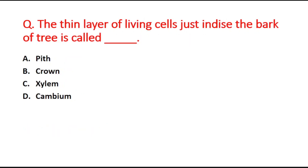Next question: the thin layer of living cells just inside the bark of trees is called blank. Option A is teeth, option B is crown, option C is xylem, and option D is cambium. The right answer is option D, cambium.